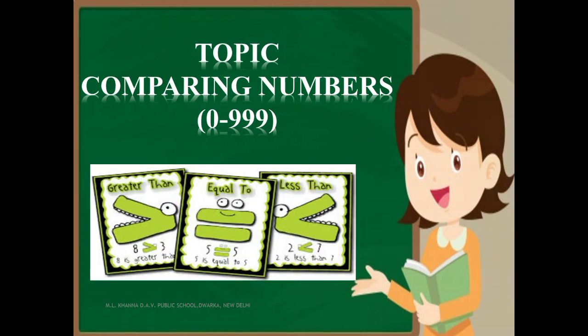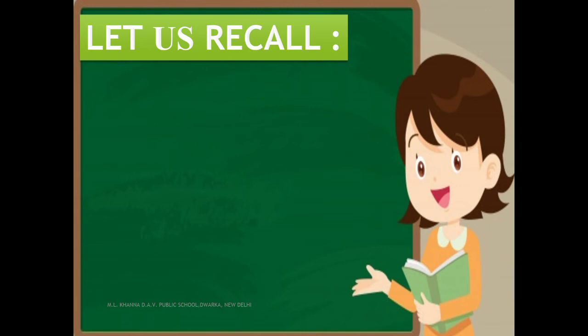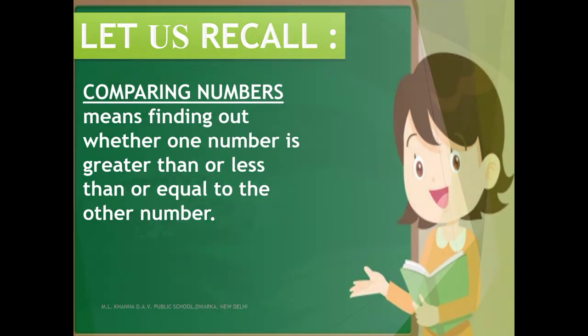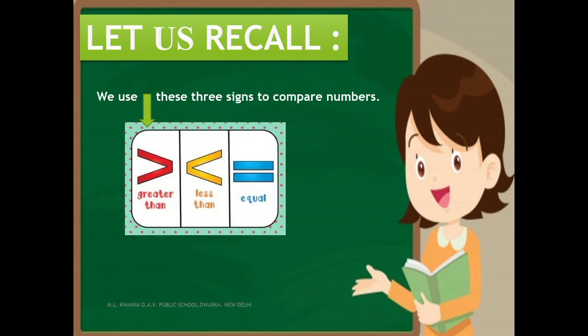Let us recall what you have already studied in Class 1 about comparing numbers. Comparing numbers means finding out whether one number is greater than, less than, or equal to the other number. You are already familiar with these three signs which are used while comparing numbers: greater than, less than, or equal to.